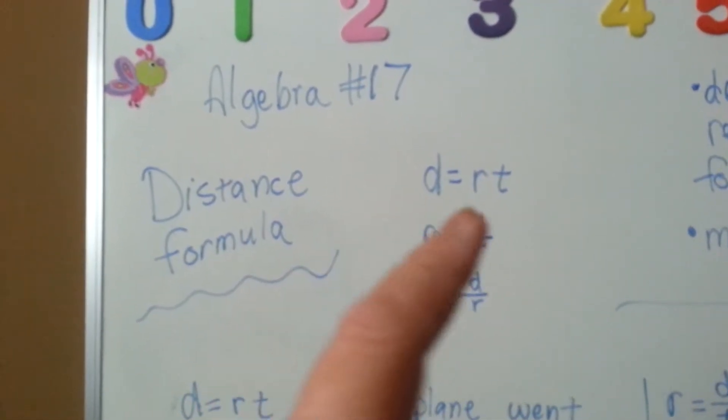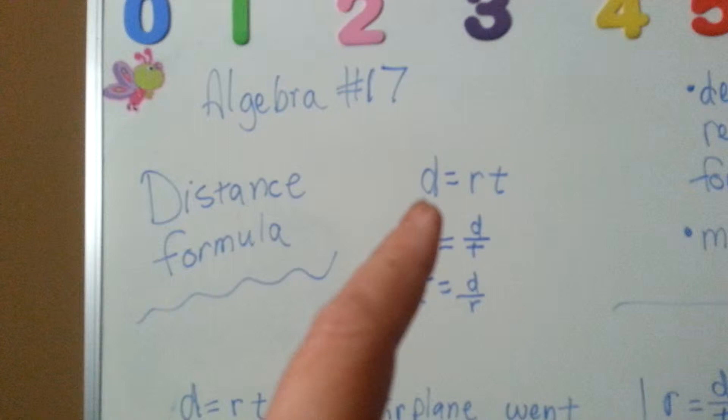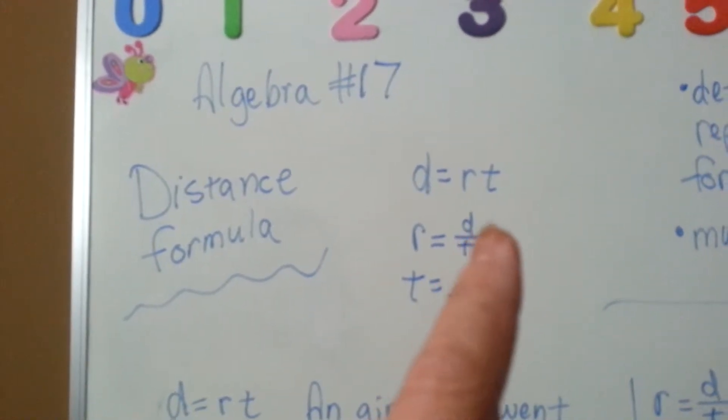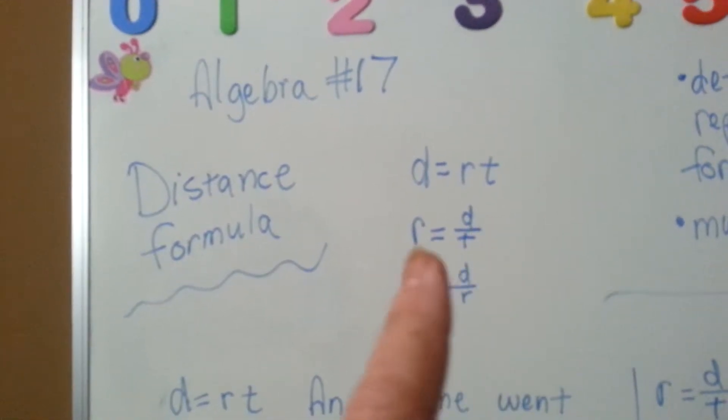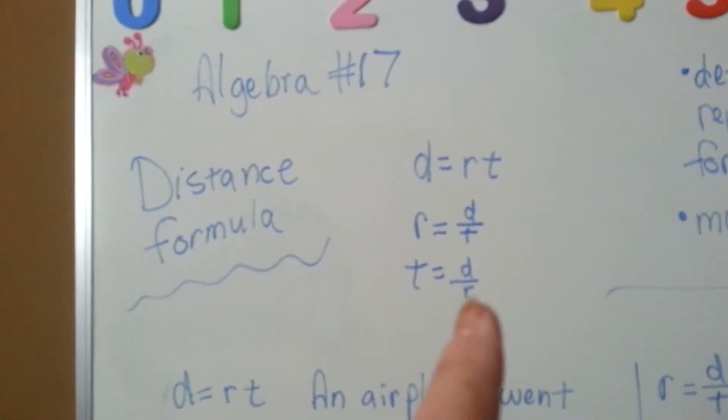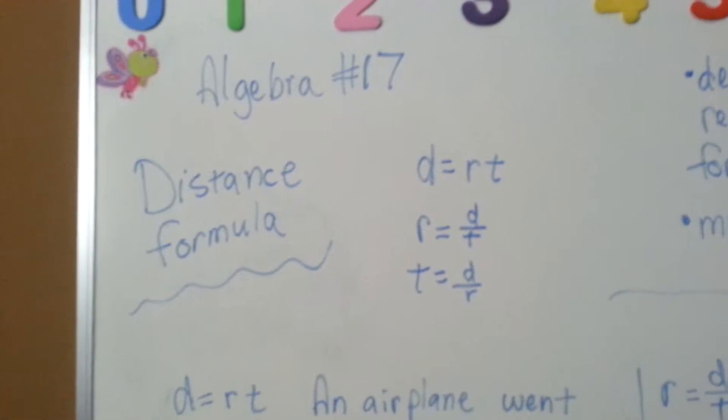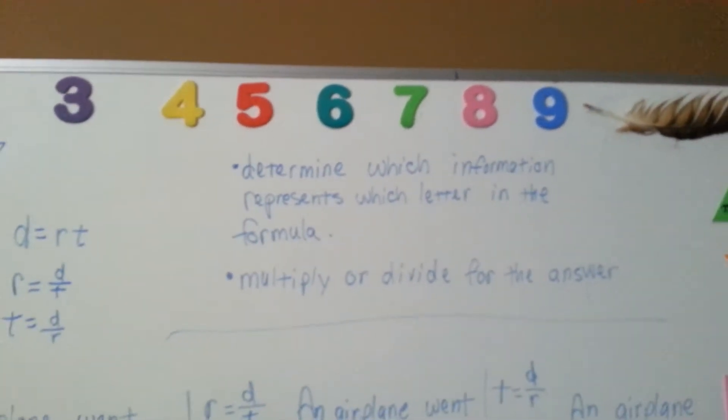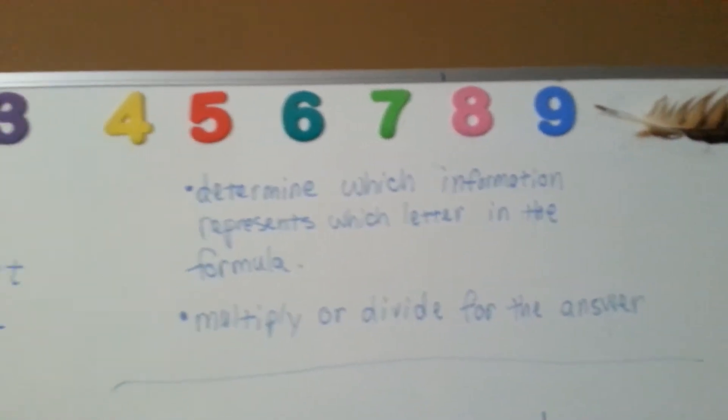It could either be done as multiplying the rate and time to get the distance, or dividing the time into the distance to get the rate, or dividing the rate into the distance to get the time. You determine which information represents which letter in the formula, then you multiply or divide for the answer.